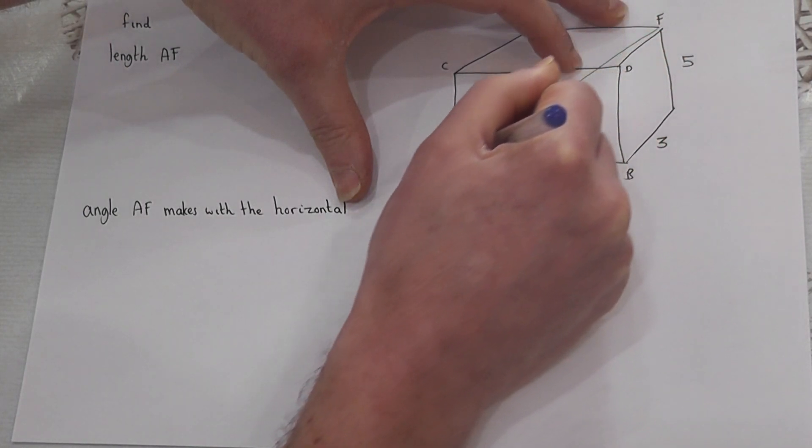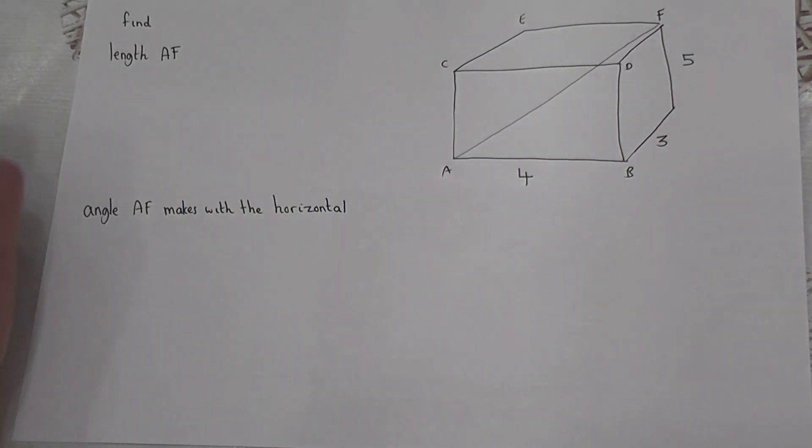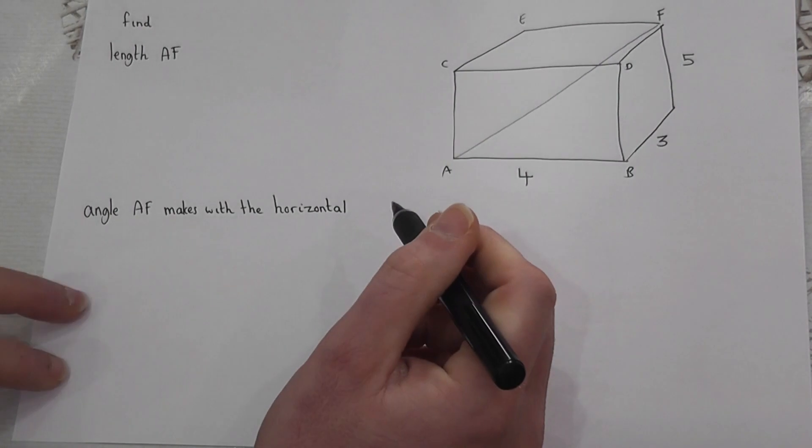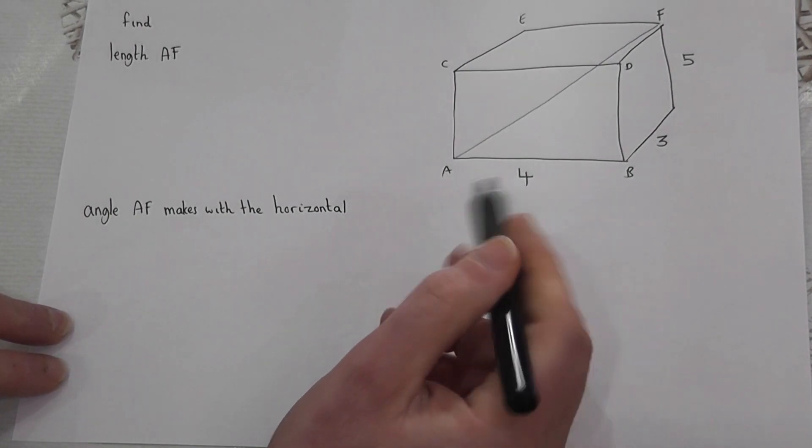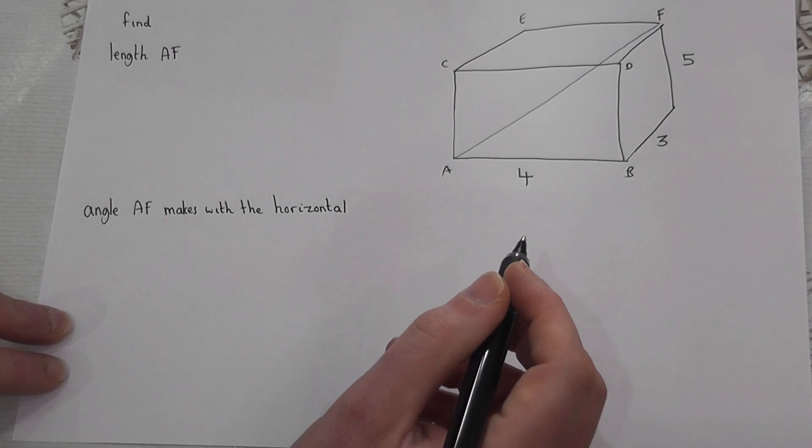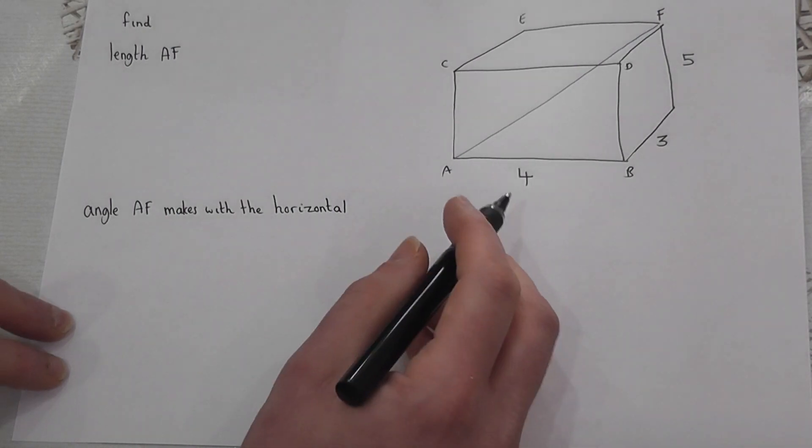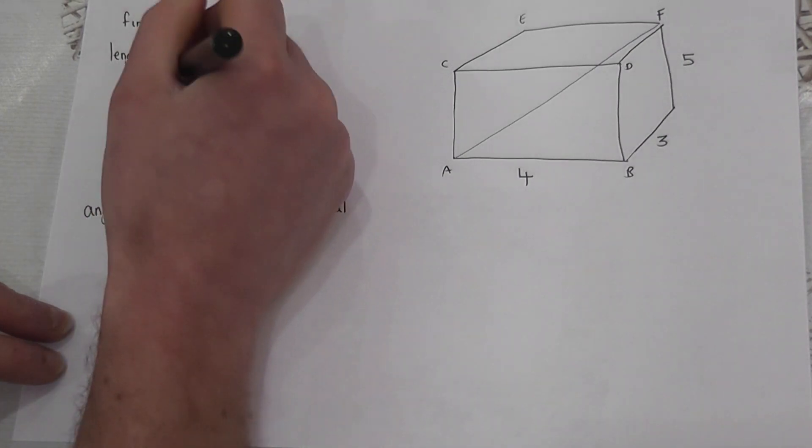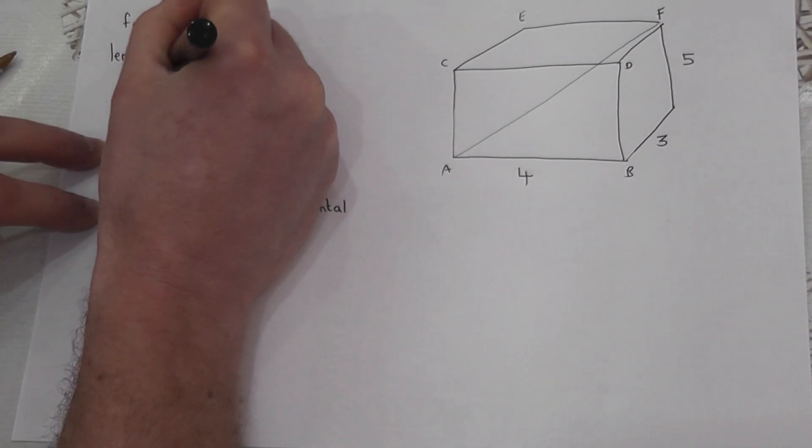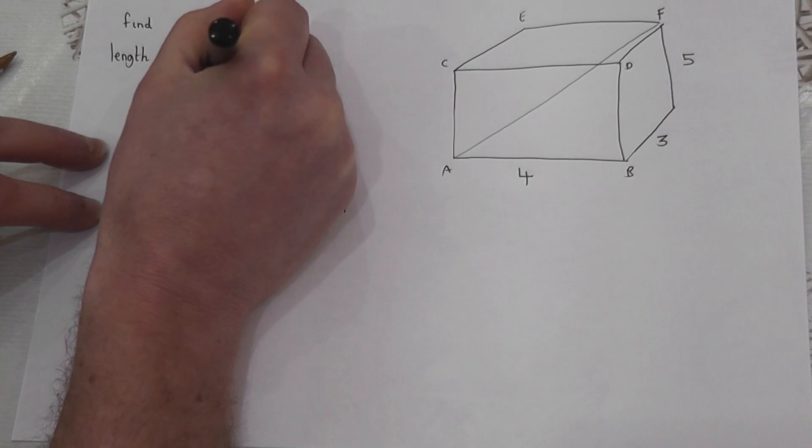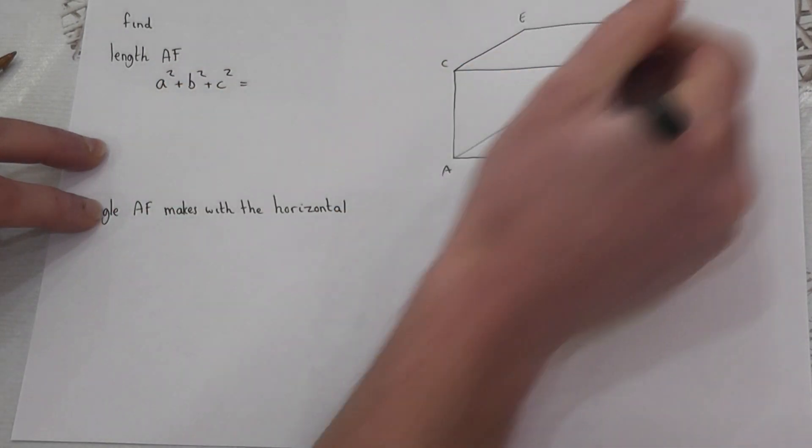It can be called the leading diagonal. I can basically apply Pythagoras in 3D, and all I do is use the formula a² + b² + c² equals this leading diagonal. Let's call it h². So this length is h.